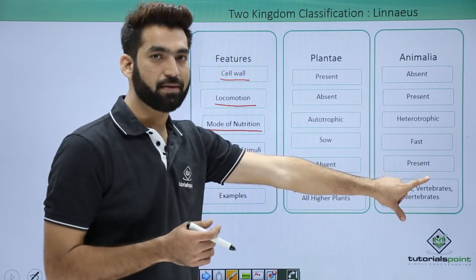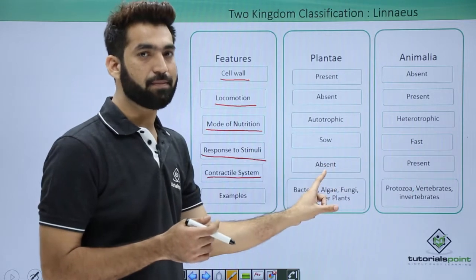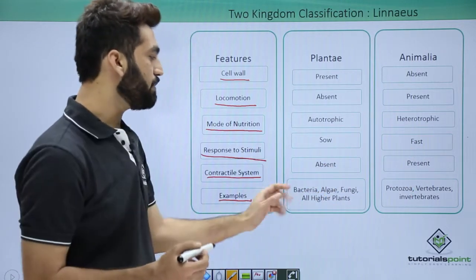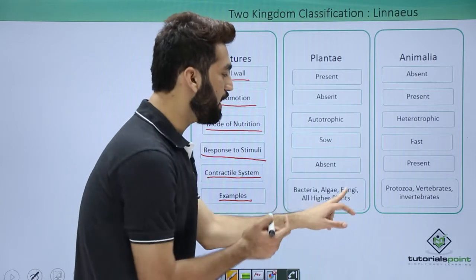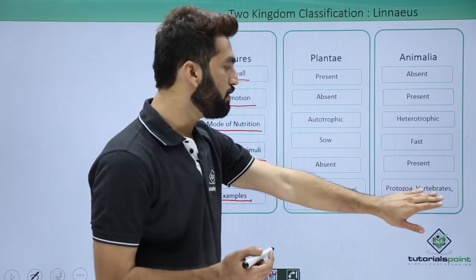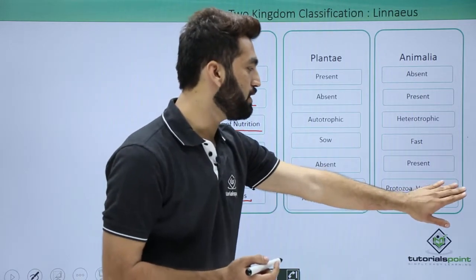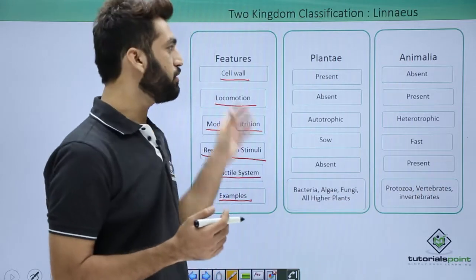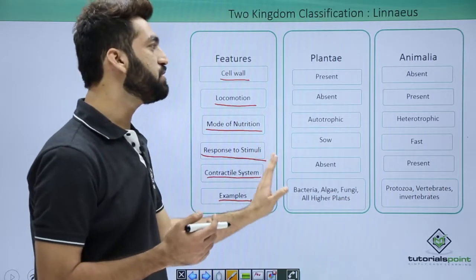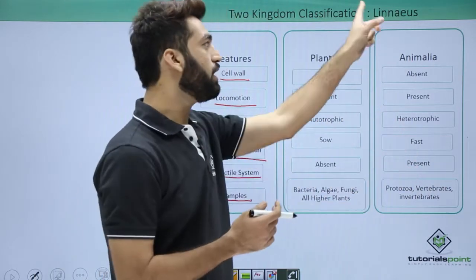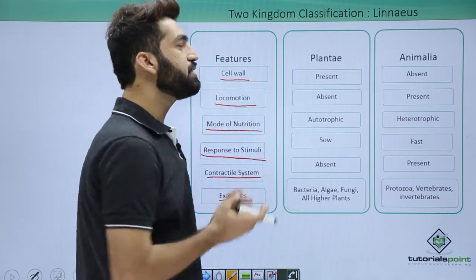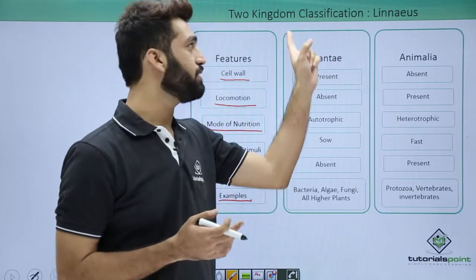The contractile system is only present in animals and is absent in plants. Some examples under Kingdom Plantae include bacteria, algae, fungus, and higher plants, while Kingdom Animalia includes protozoa, vertebrates, and invertebrates. These are the significant differences between plants and animals as mentioned by Linnaeus, forming the two kingdom classification system.